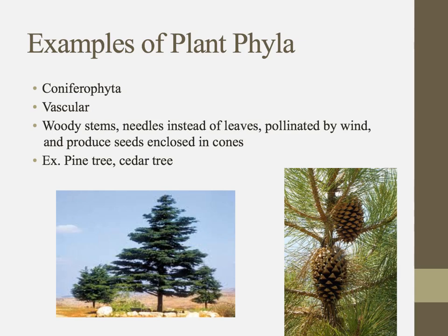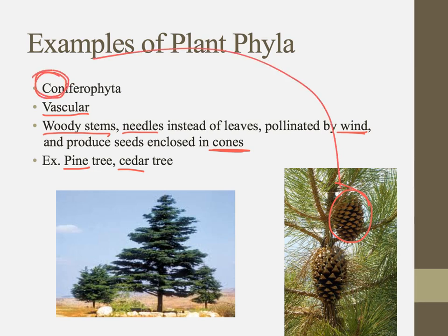Next are the conifers, or coniferophyta if you're fancy. These have vascular tissue and woody stems, so they grow into trees. They have needles instead of leaves — an adaptation to prevent water loss. They are wind-pollinated, which is why their flowers are pretty unremarkable. They produce seeds enclosed in cones. These are our pine trees, cedar trees, and Christmas trees — our evergreen trees that produce cones. Cones and coniferophytes go together.